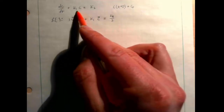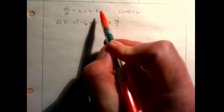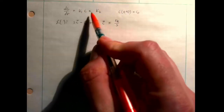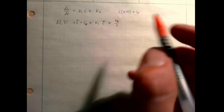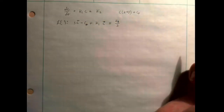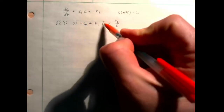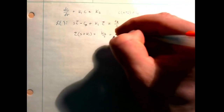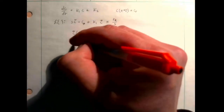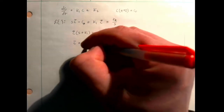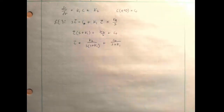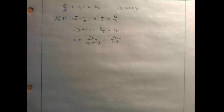This is our Laplace-transformed version. We've taken the differential equation and moved it into the s-domain. You could solve the original using the integrating factor method or by guessing an exponential form, but this is how you do it with Laplace transforms. Now we collect terms: C-bar times (s + K1) equals K2/s + C0. Dividing through gives C-bar = K2 / [s(s + K1)] + C0 / (s + K1).